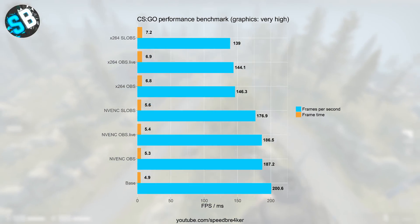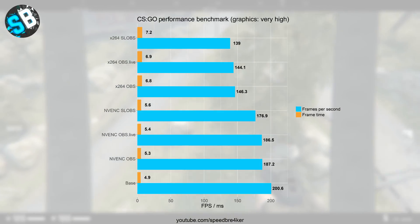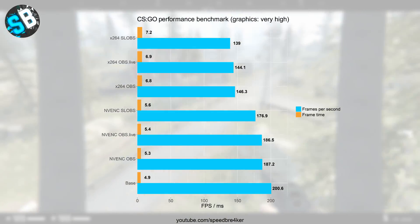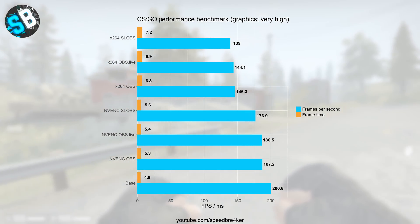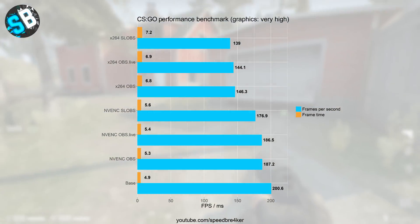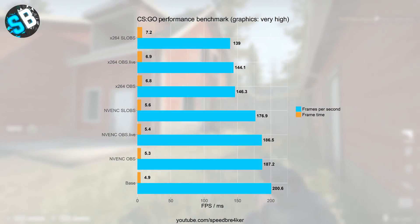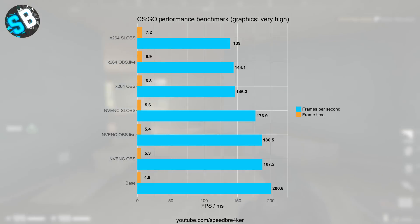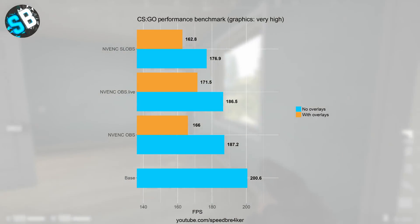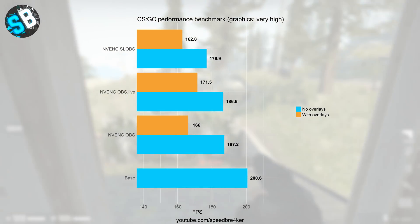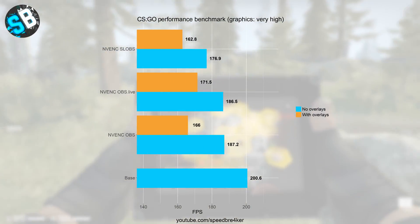Next let's look at CSGO — once again without any overlays enabled. Because CSGO is a very CPU-intensive game, we can see a clear performance decrease going from NVENC to x264. Streamlabs OBS is about the worst performing of the three, whereas OBS Live and regular OBS perform about the same. Moving on to the overlay performance benchmarks, OBS Live produces the highest performance out of the three OBS derivatives, so if you're live streaming CSGO I would highly recommend OBS Live for the highest in-game performance.